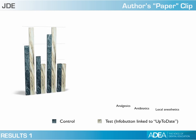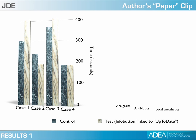In terms of the results, we can see here that for the four different cases, the time recorded to identify the drug-drug interaction varied. For case one, the test group took slightly longer than the control. For case two, the situation changed — subjects using InfoButton were faster. A similar situation occurred for session two, so basically once subjects became familiar with the tool, it took them less time to identify the correct answers.